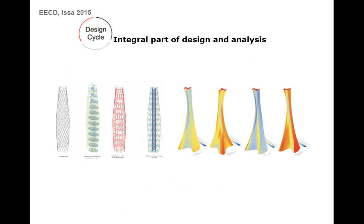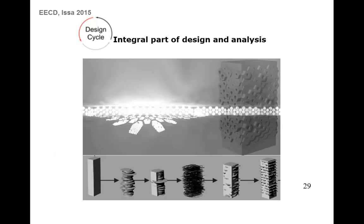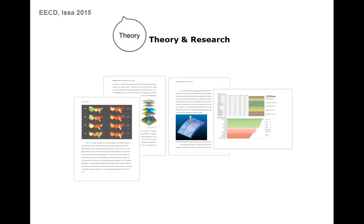As part of the design process, students conducted structural and environmental analysis to further develop their designs. Here, a student project shows how the study of glare informed their design and how they transitioned from left to right through exploring different variations and options for their building mass.